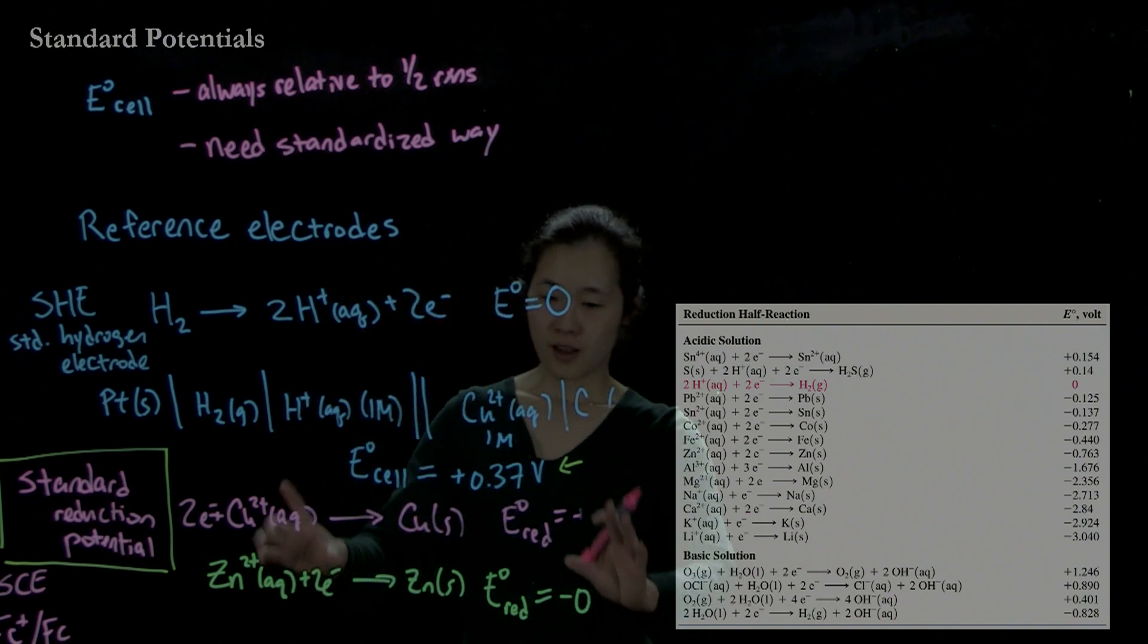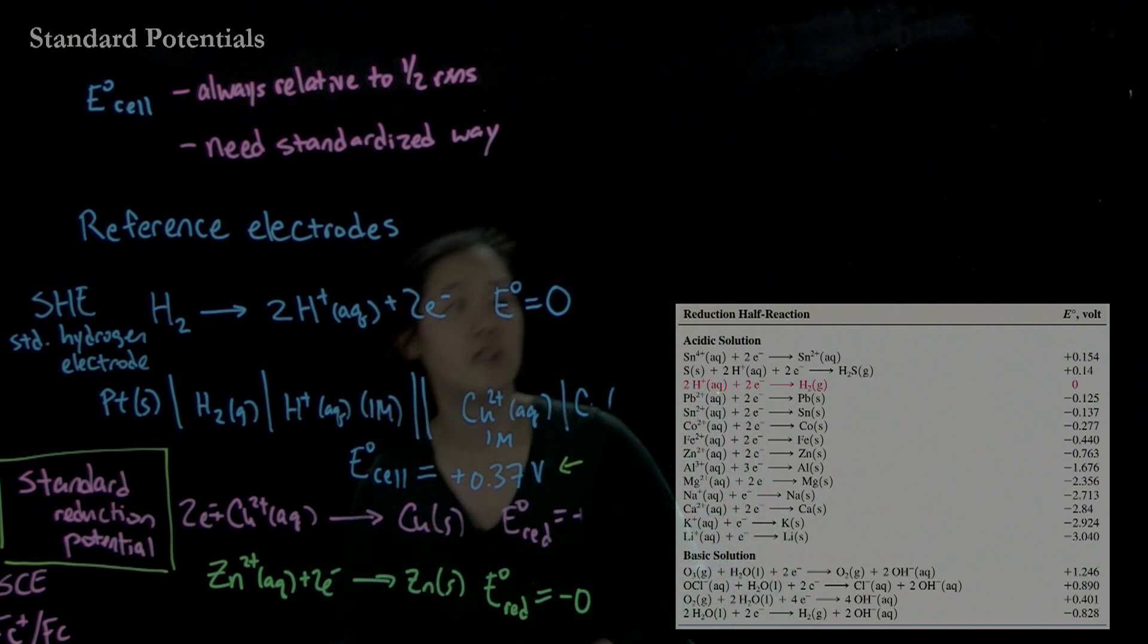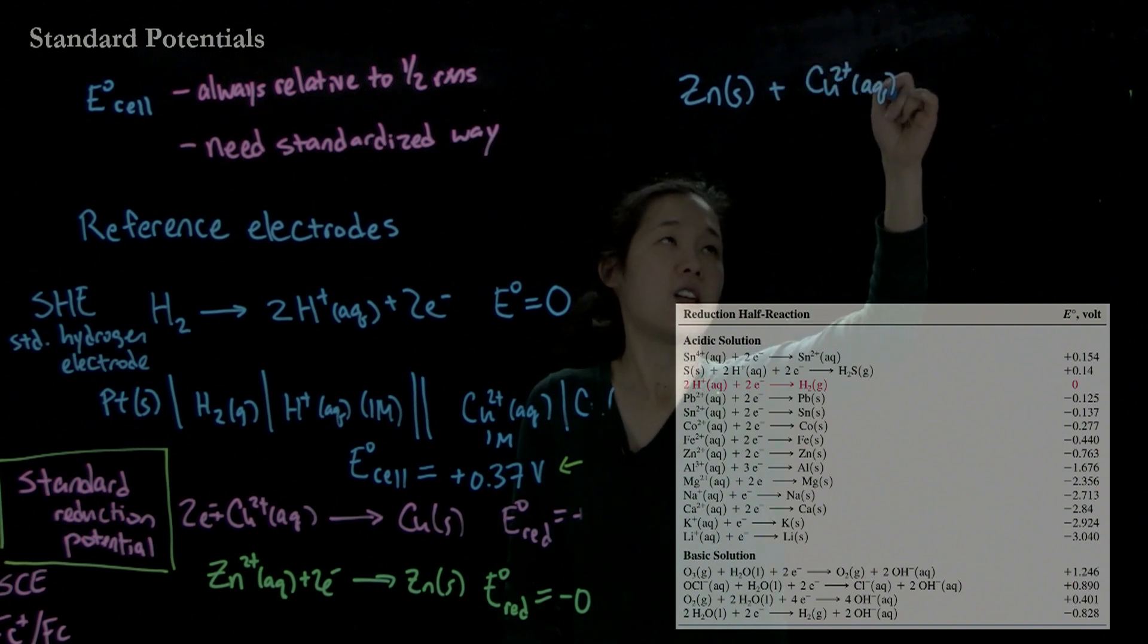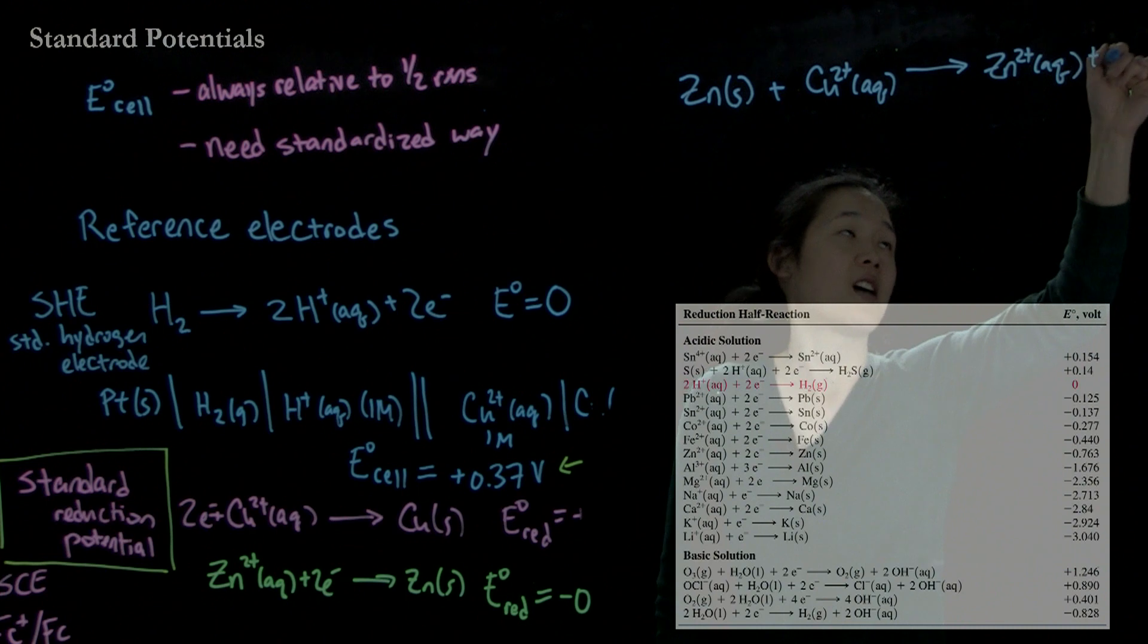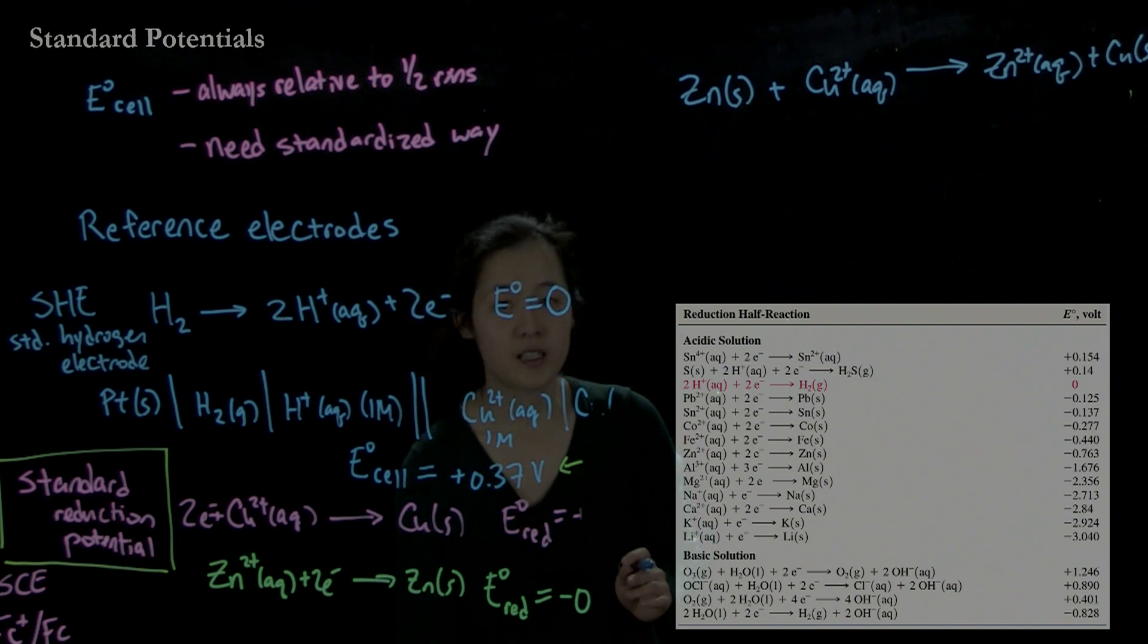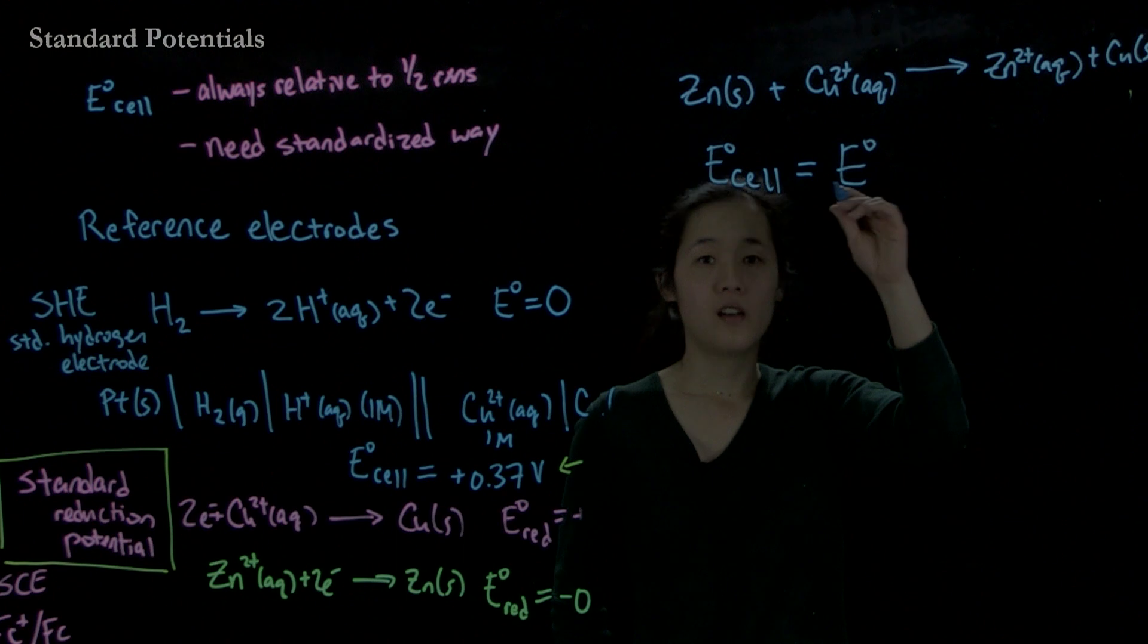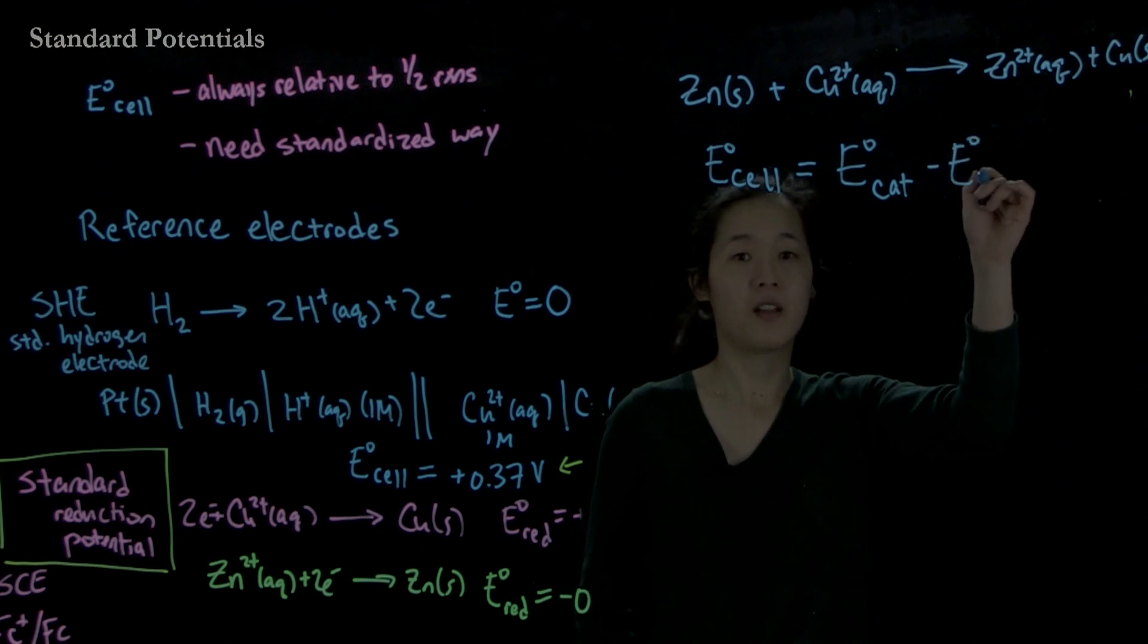So back to this question. Suppose we wanted to find the standard potential of going from zinc metal - this is the kind of cell we've been talking about for the longest time - and we're adding copper 2 aqueous, and we're going to zinc ions and copper metal. So the key equation that you'll need to know is that the standard cell potential is going to be E-naught of the cathodic side minus E-naught of the anodic side.